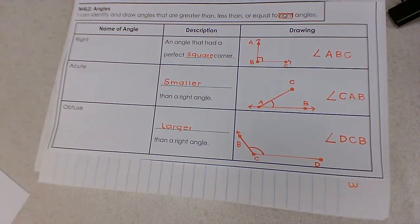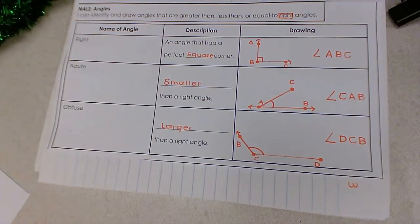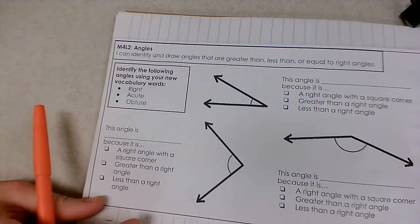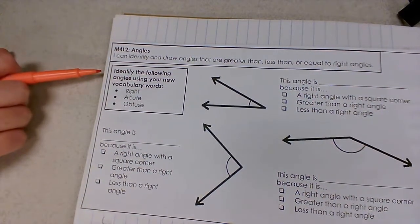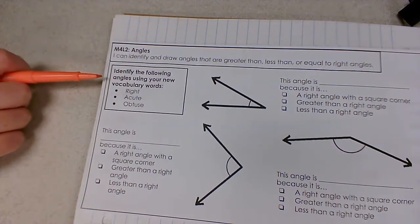Now that you know the three different types of angles, can you recognize them in drawings? Let's see. Let's look at these three different angles on the note page in front of you. Identify the following angles using your new vocabulary words.